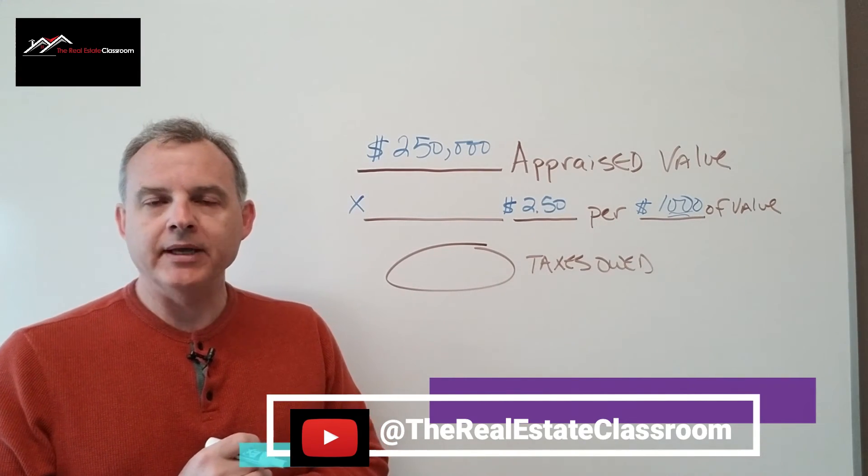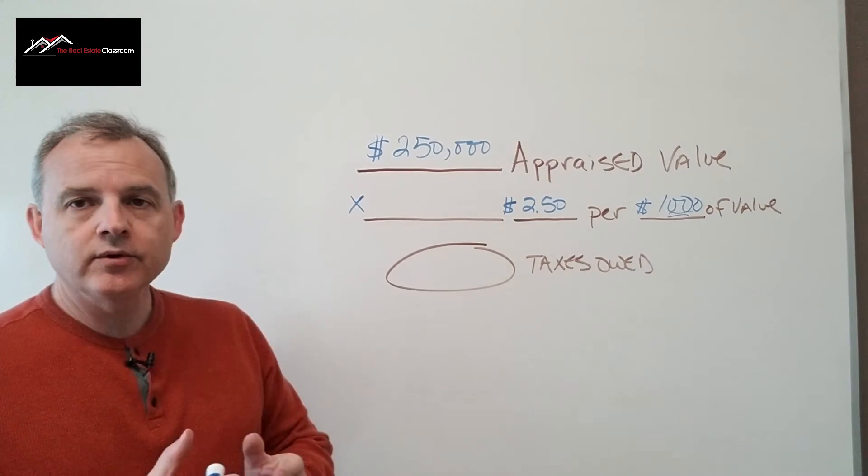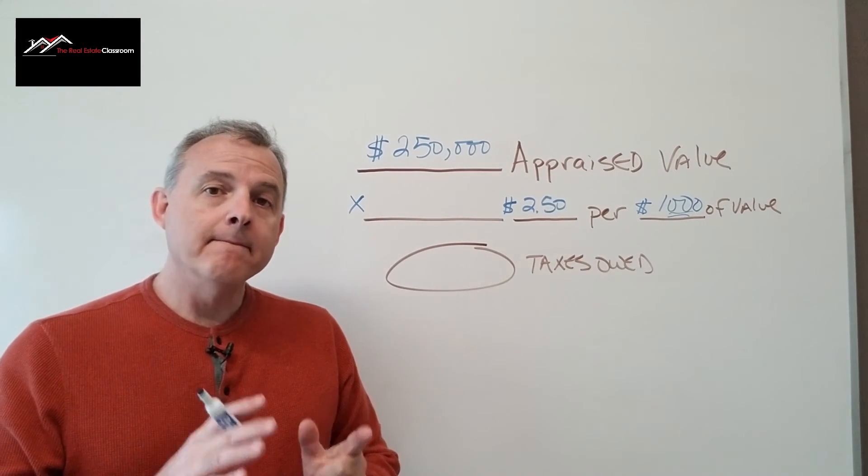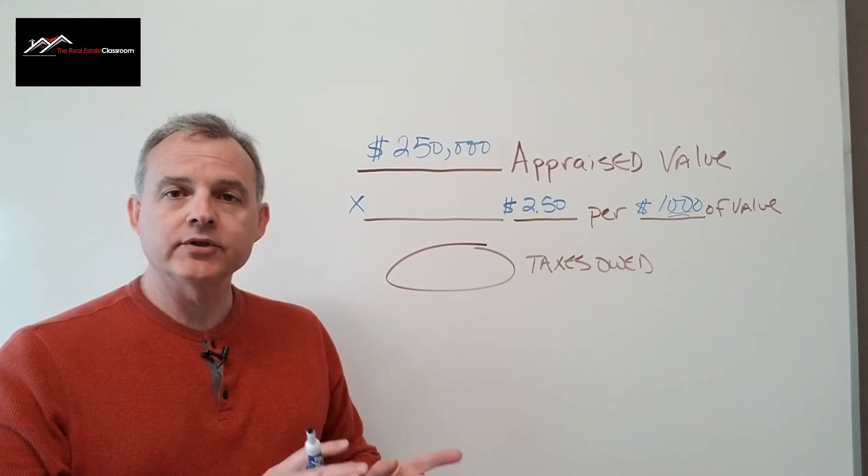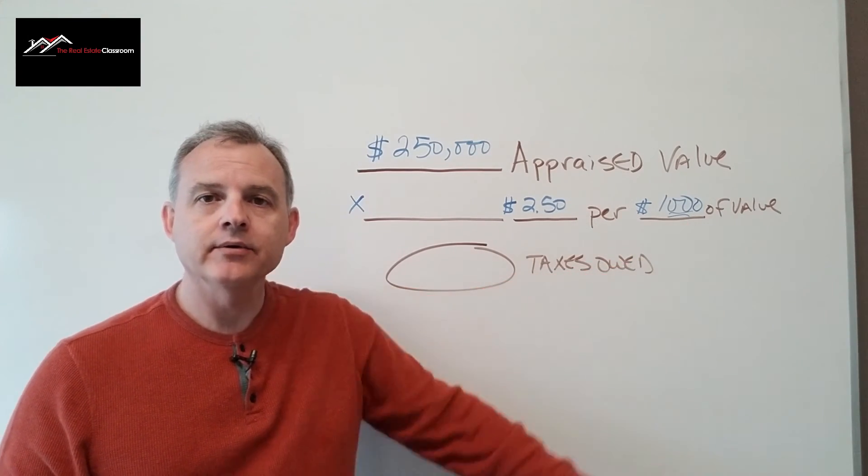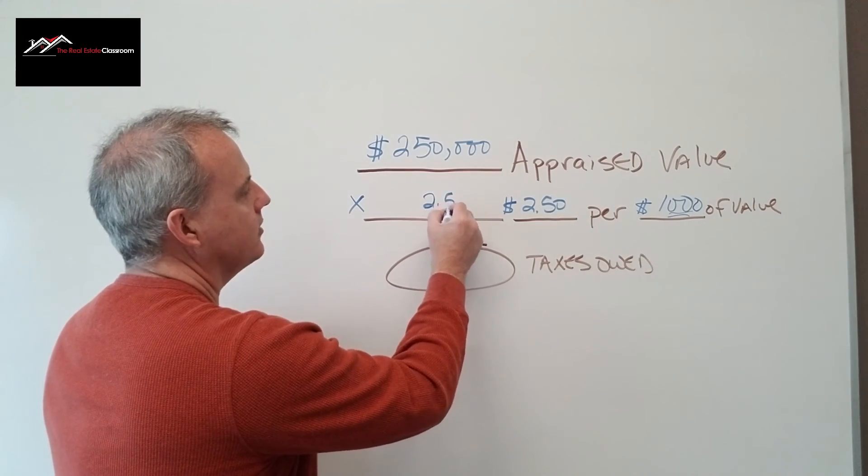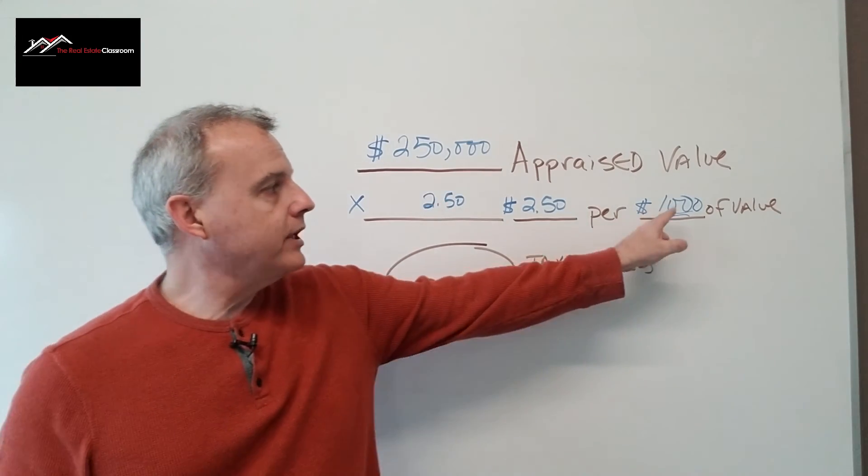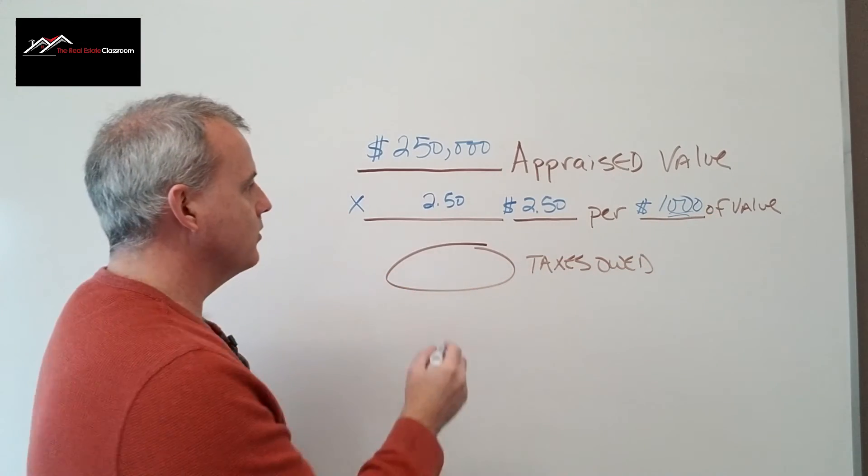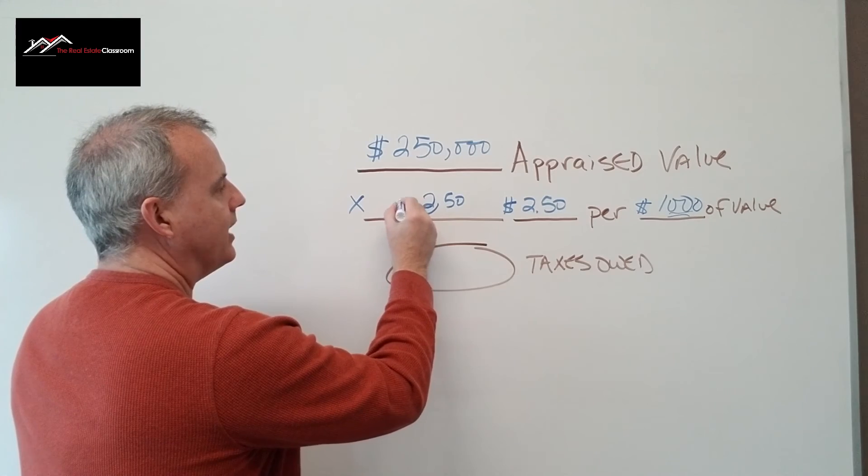Let's look at a different scenario. Maybe the test question says the appraised value of the property is $250,000, but the county taxes it at a rate of $2.50 per $1,000 of value. So how do we do that? We put our 2.50, and then there are three zeros in 1,000, so we're going to move our decimal place three spots.